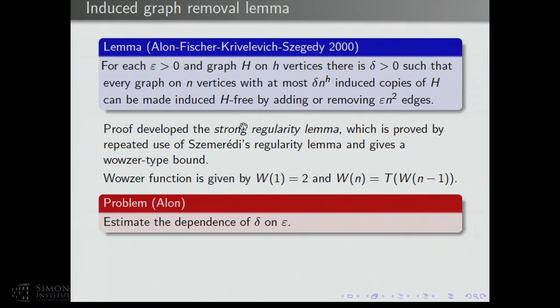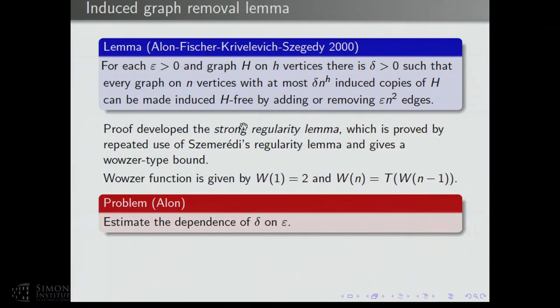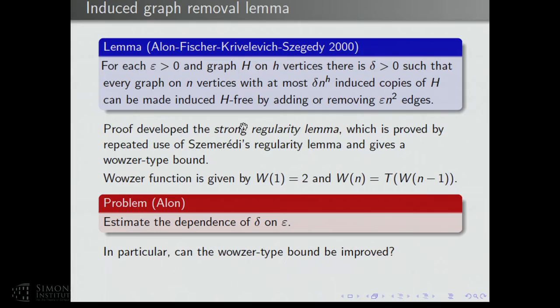Nogolon asked to estimate the dependence of delta on epsilon in the induced graph removal lemma. One natural approach would be to show the strong regularity lemma could be proved with a better bound. So if you have this enormous upper bound, maybe there's a better way. What is the strong regularity lemma?